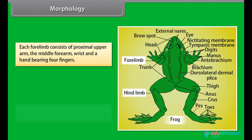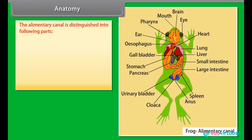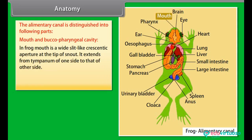The trunk comprises the anterior thorax and posterior abdomen. A pair of forelimbs and hindlimbs is appended to the trunk. Each forelimb consists of a proximal upper arm, middle forearm, wrist and a hand bearing four fingers. The hindlimbs are much longer and more powerful than the forelimbs. The alimentary canal of the frog is distinguished into: mouth and buccal pharyngeal cavity.